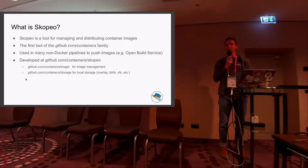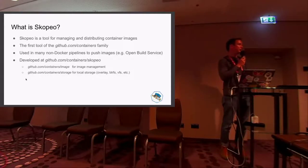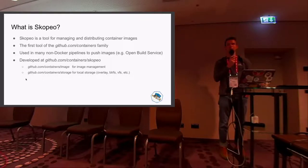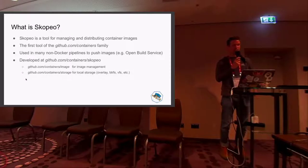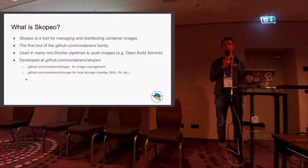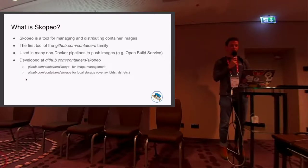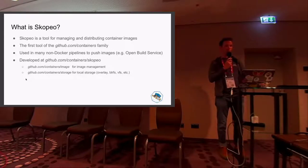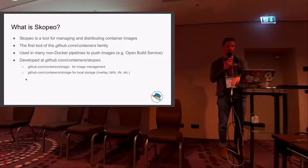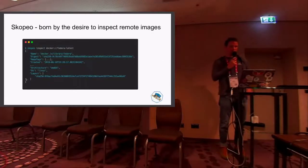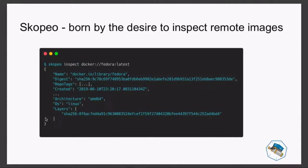When you want to inspect an image with Docker, it needs to be pulled first. But if you just want to check the configuration, the layers, and things like that, that's not really necessary. Docker said the CLI is already complex enough. But they said a registry is just an HTTP server, so in theory you can just curl everything. Step by step it evolved into an entire tool for many more purposes than just remote inspection.